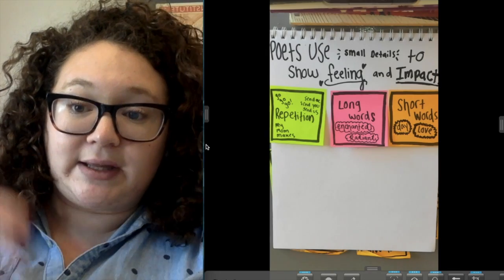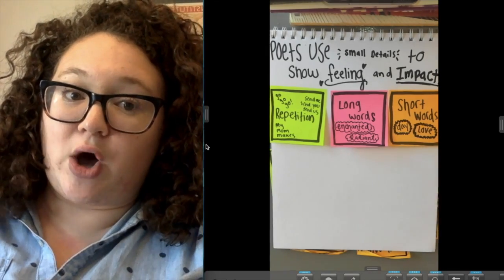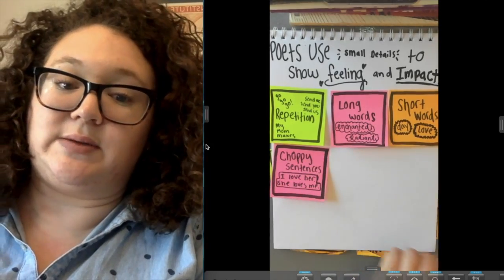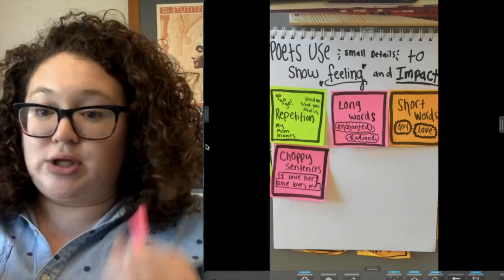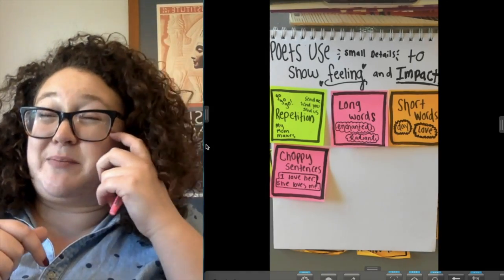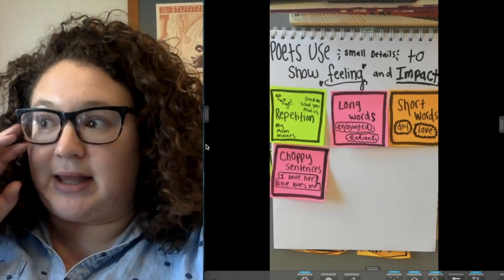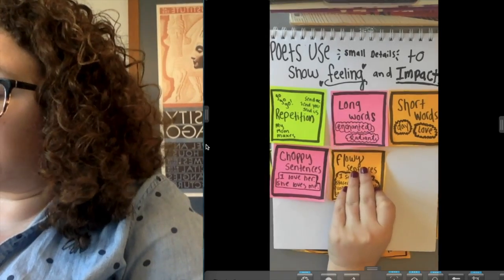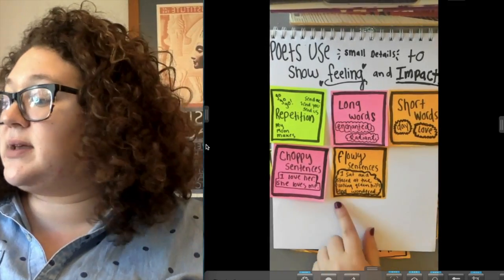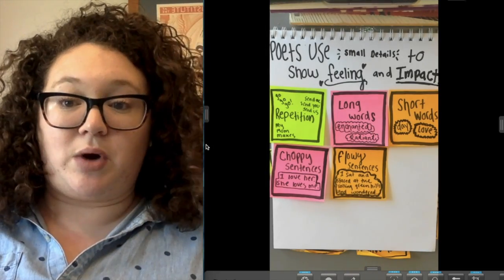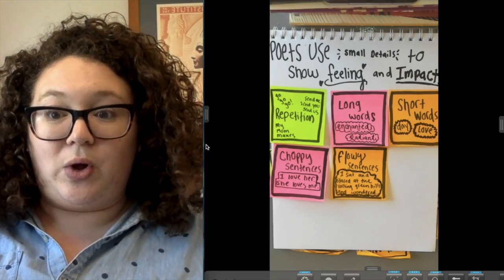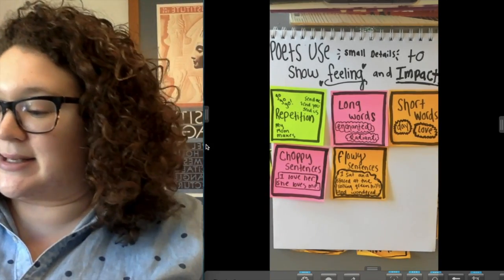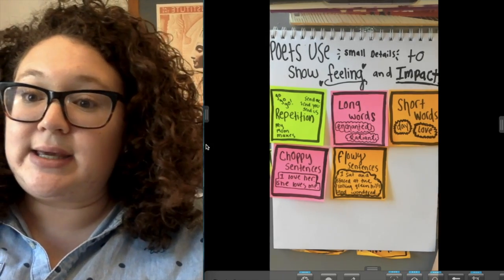Short words convey a certain feeling and impact you in a particular way. Another small detail to look for in poetry is a choppy sentence — like 'I love her,' 'she loves me,' 'the ball went' — short sentences of maybe four words or less. Those convey a certain kind of feeling. Compare that to a flowy sentence on the flip side: 'I sat and stared at the rolling green hills and wondered' — that's much more flowing, calm, and cool.